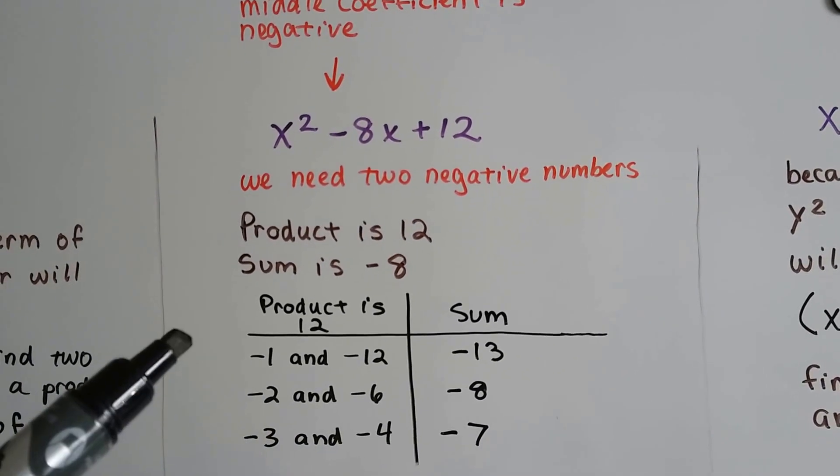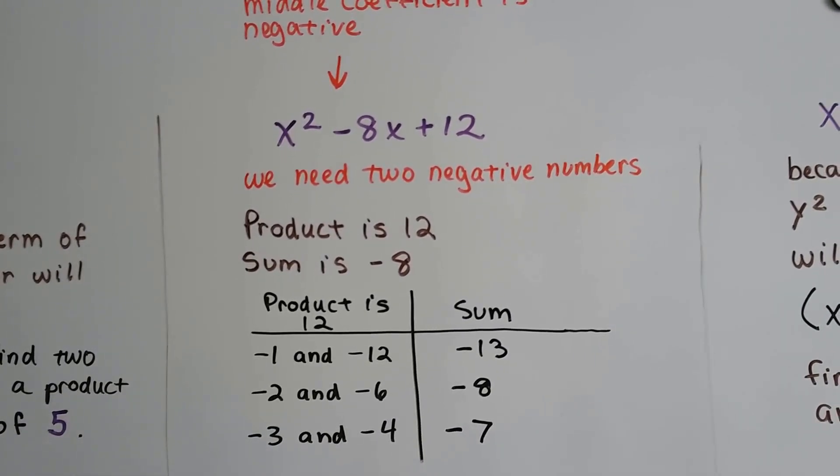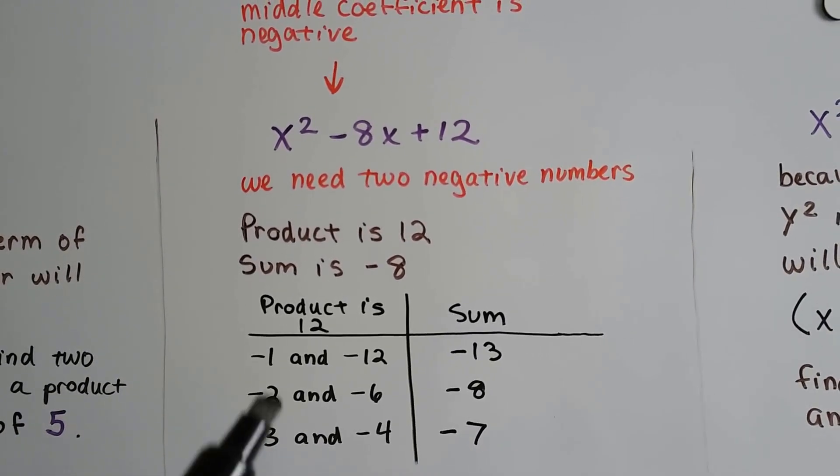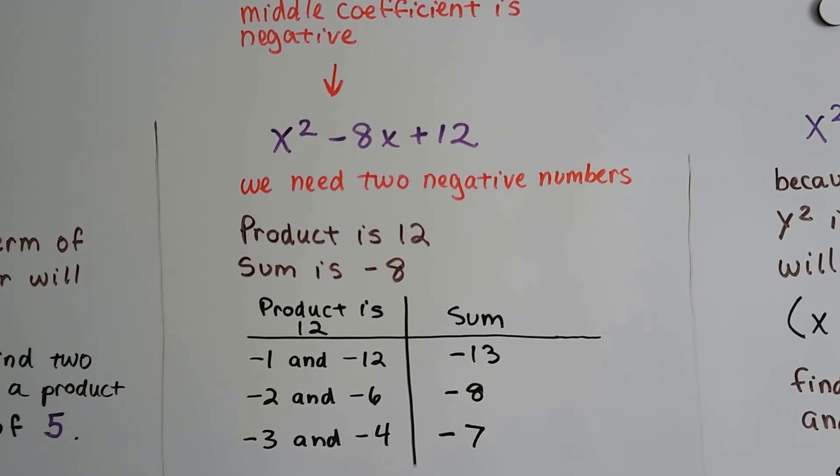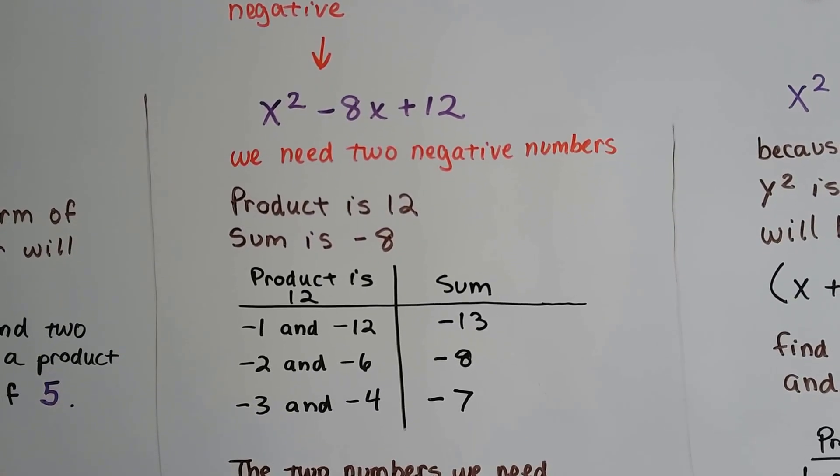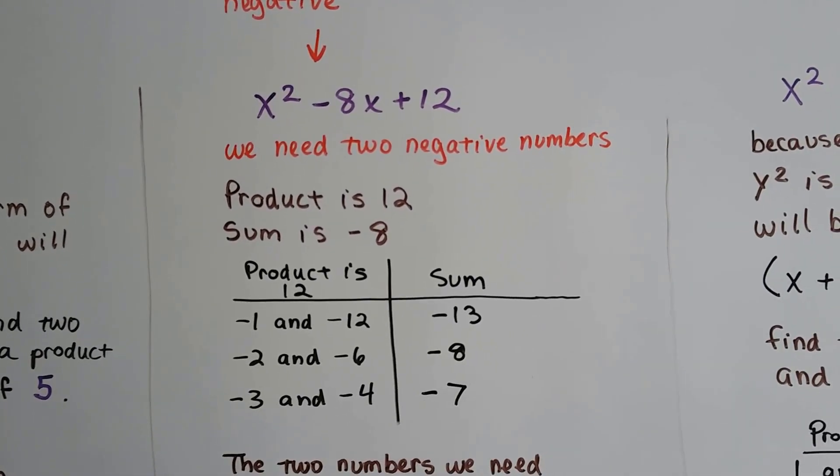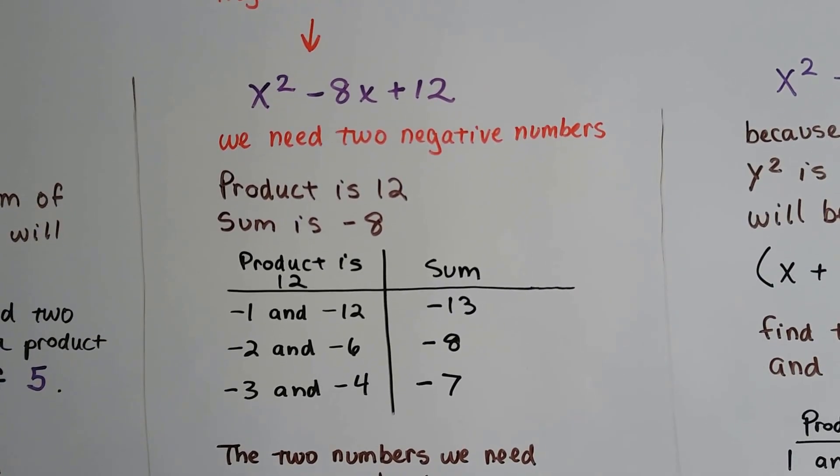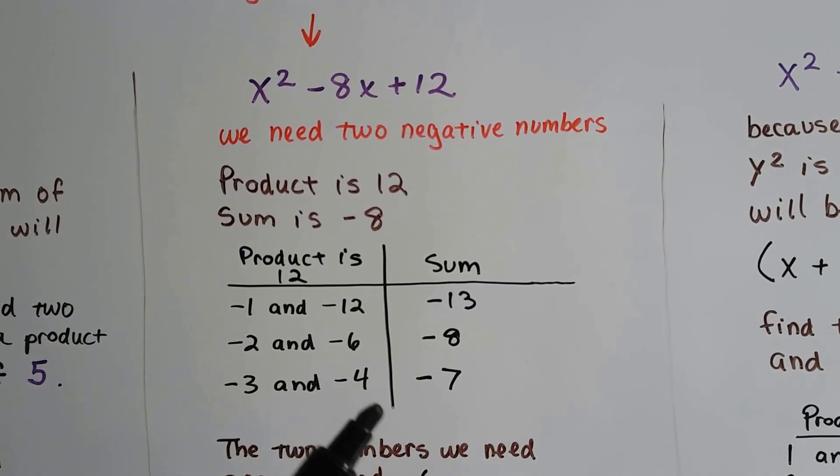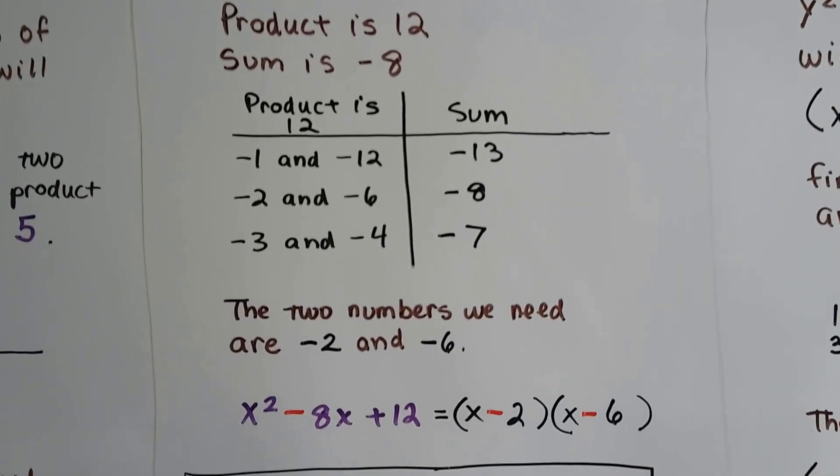So what times what equals 12? Will a negative 1 and a negative 12 make a 12? But when we add them together, we get a negative 13. We know we need two negative numbers because of that negative sign in the middle there. How about negative 2 and negative 6? When we add those together, we get a negative 8. I think that's it. Because negative 3 and negative 4 make a negative 7. So it looks like negative 2 and negative 6 are the numbers we need.